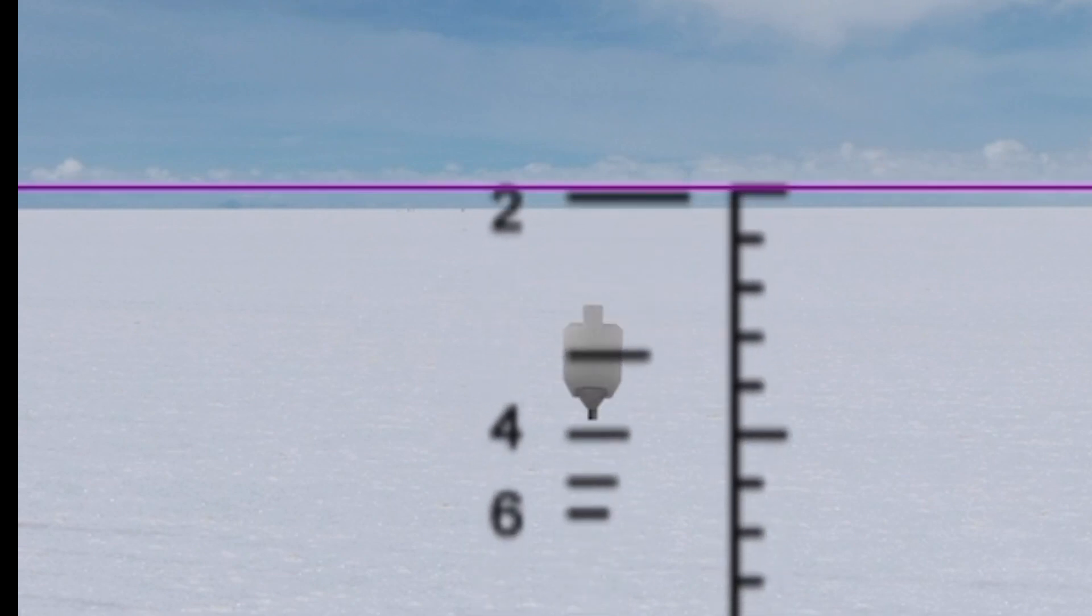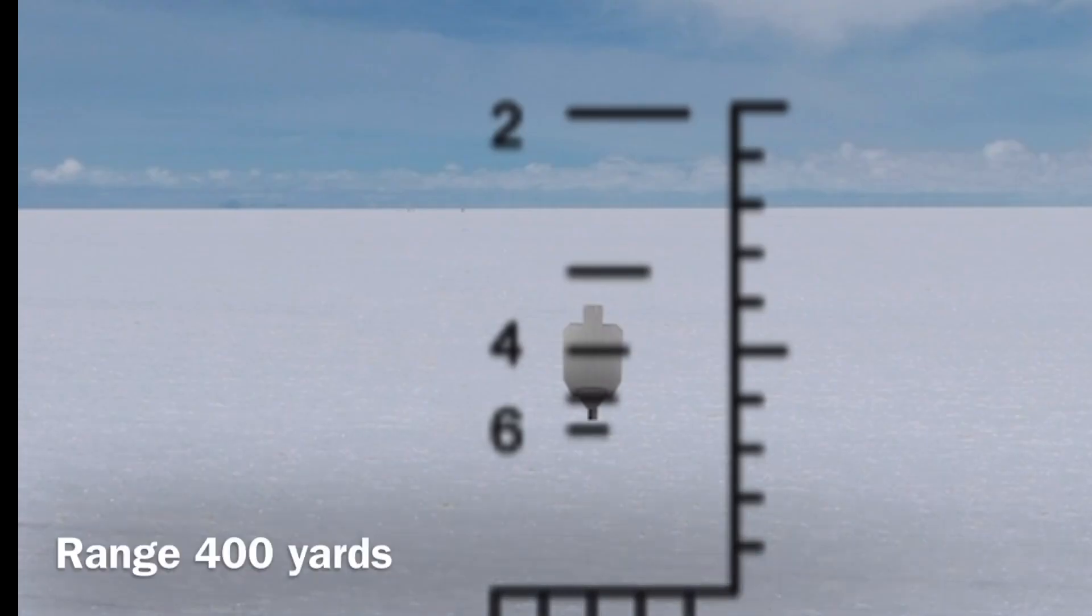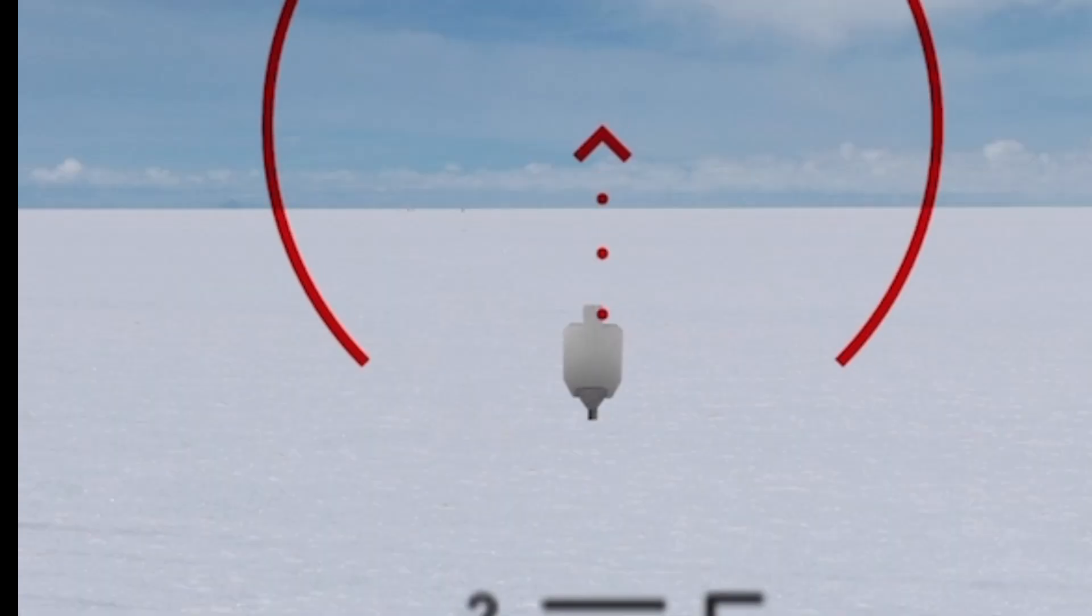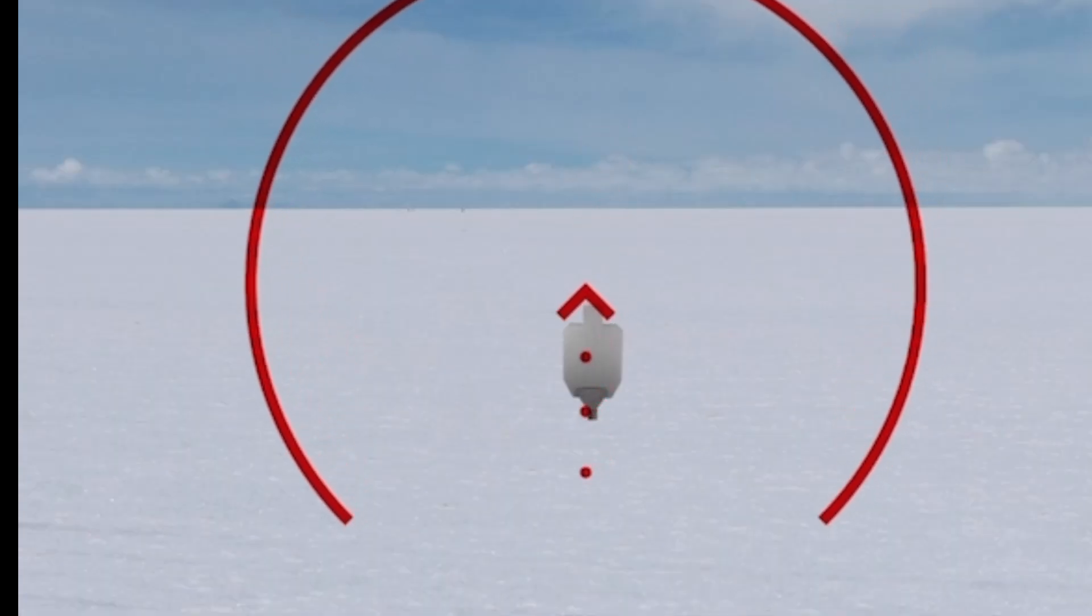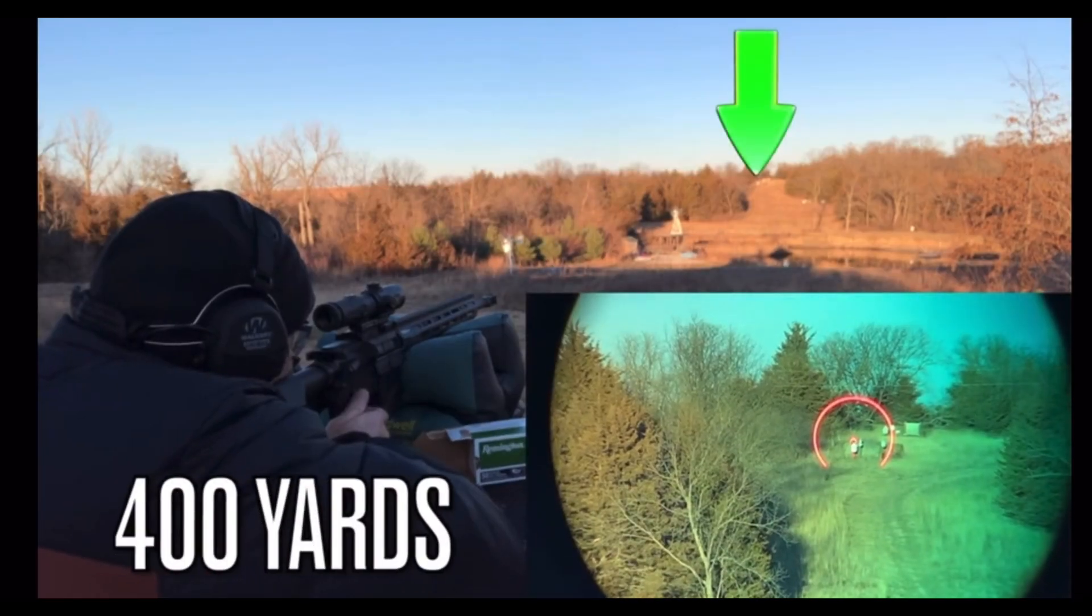And this is paired off with the ACSS micro dot. So you can use the ranging on the Pegasus and then transfer to the BDC to the micro dot going to 400 yards and then five and six.